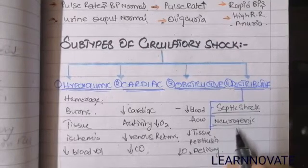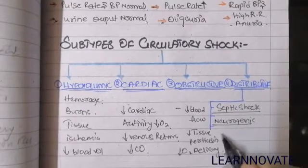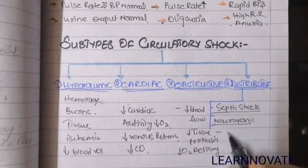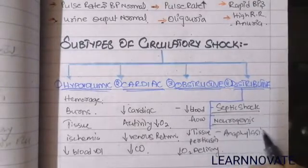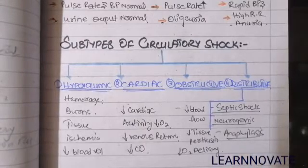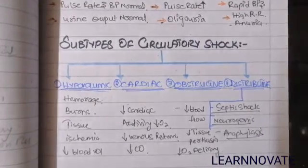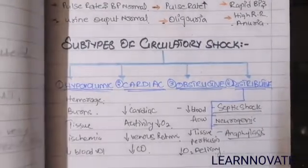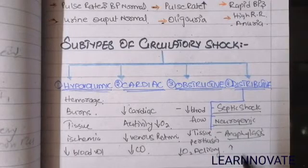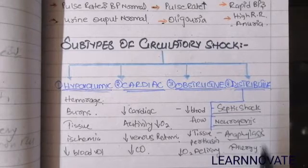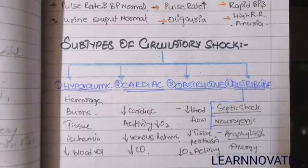The third subtype of distributive shock is anaphylactic shock, which is a condition involving an allergic reaction. There is a reaction between antibody and antigen causing the release of histamine-like products and the production of bradykinins from mast cells, triggering an allergic reaction. Increased antigen-antibody reactions cause anaphylactic shock, which includes conditions like hay fever and various hypersensitivity types.